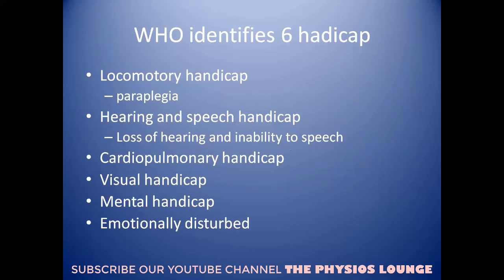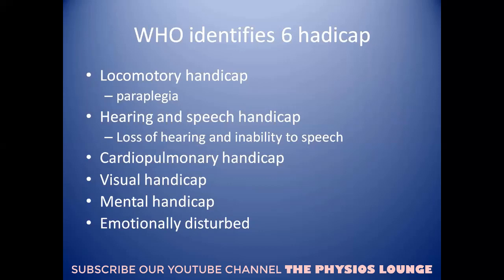WHO has 6 types of handicap: locomotory handicap; hearing and speech handicap — loss of hearing and inability to speak; cardiopulmonary handicap — respiratory or cardiac issues for which you need a supportive device; visual handicap — when you need glasses and proper vision; and mental handicap including emotional disturbance.